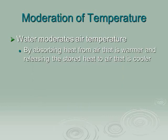The second emergent property we discussed is that water has the ability to moderate temperature — it does that by absorbing heat from warmer air and releasing stored heat to cooler air. For example, coastal areas tend to have a more moderate, consistent climate than inland areas like the Midwest.